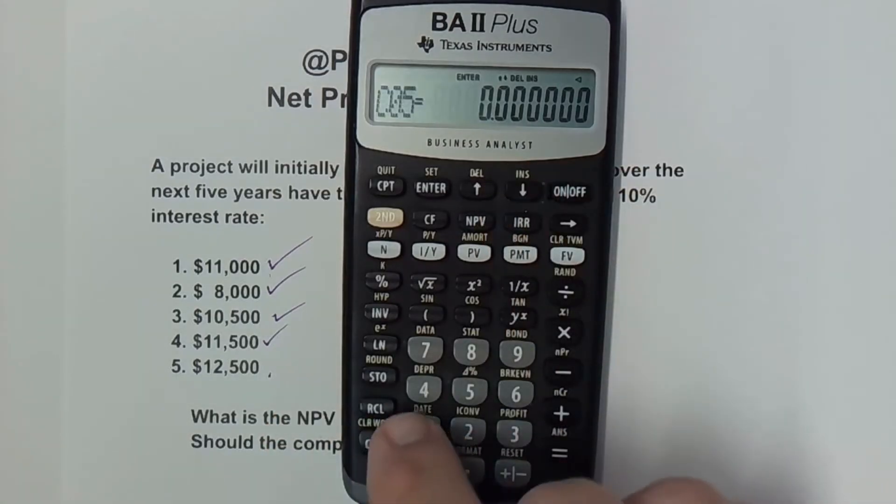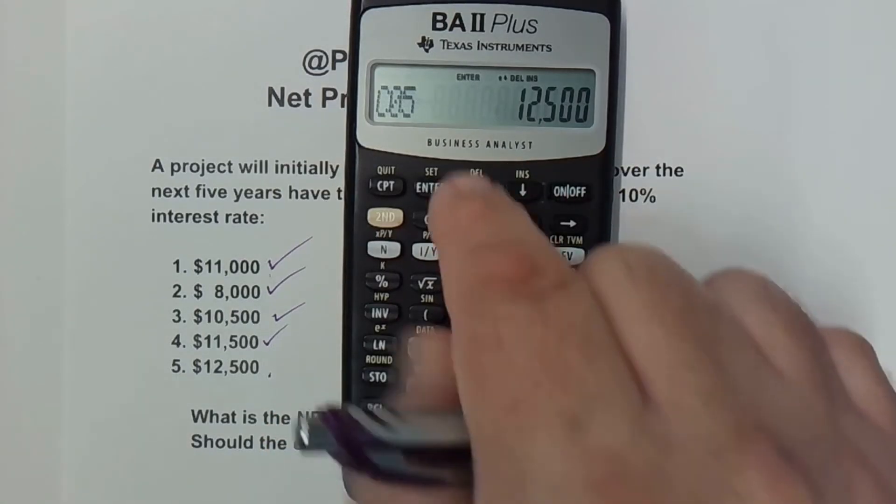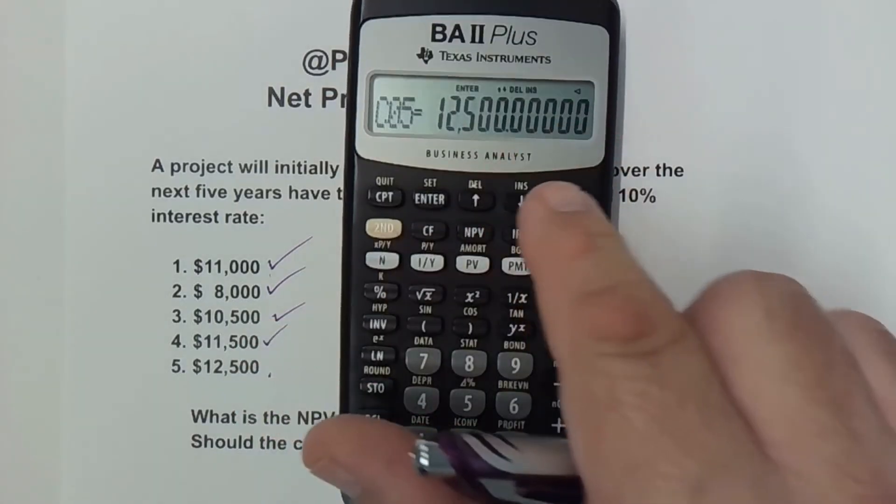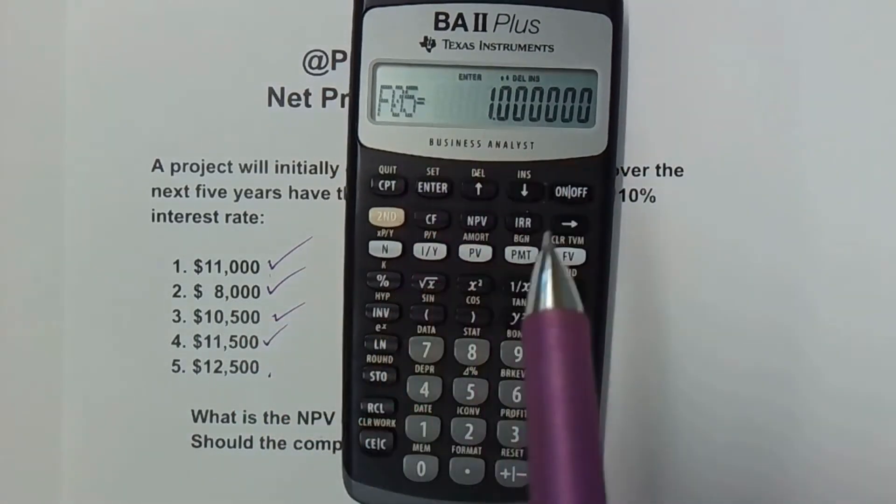Now cash flow 5. The last one is $12,500. Hit enter and of course the frequency is 1.